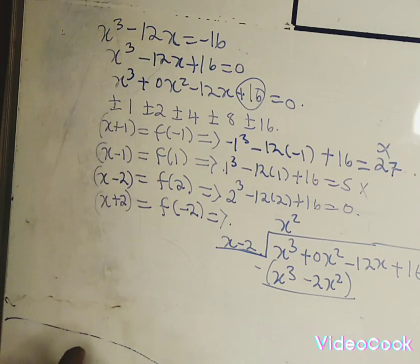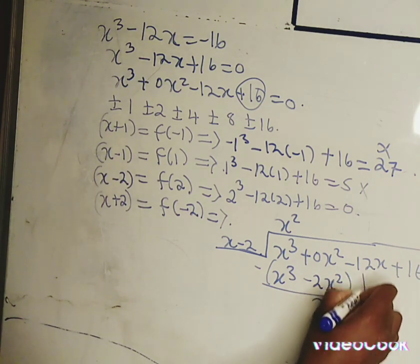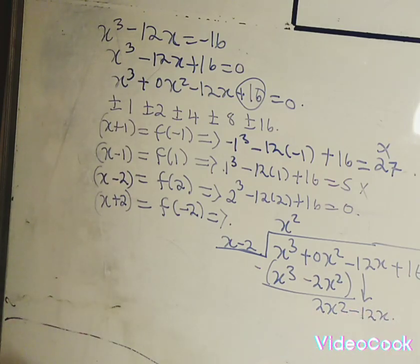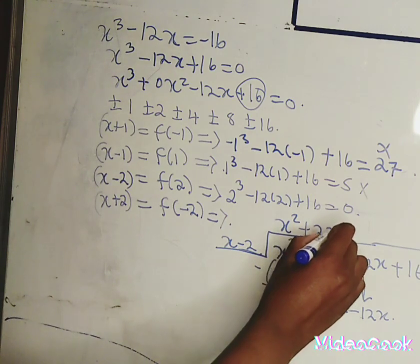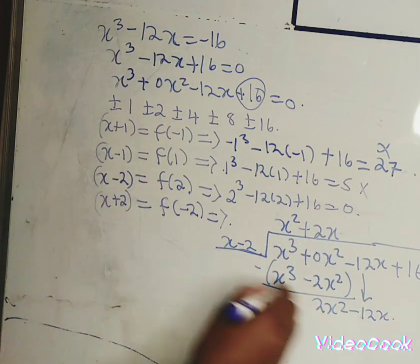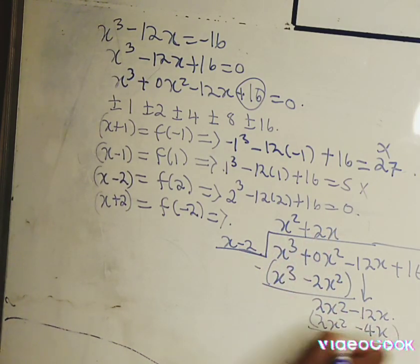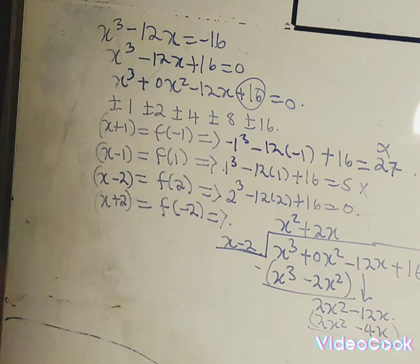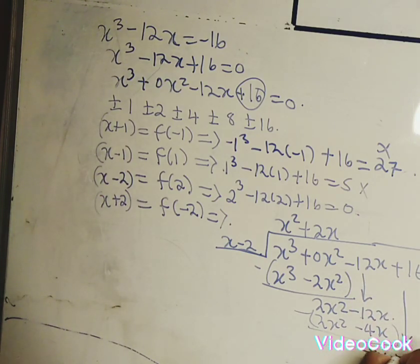We subtract: x cubed minus x cubed is 0, and 0 minus minus 2x squared gives positive 2x squared. We bring down the negative 12x. Now, how many times does x go into 2x squared? That's 2x. So 2x times x gives 2x squared, and 2x times minus 2 gives negative 4x. Subtracting: 2x squared minus 2x squared is 0, and negative 12x minus negative 4x gives negative 8x.